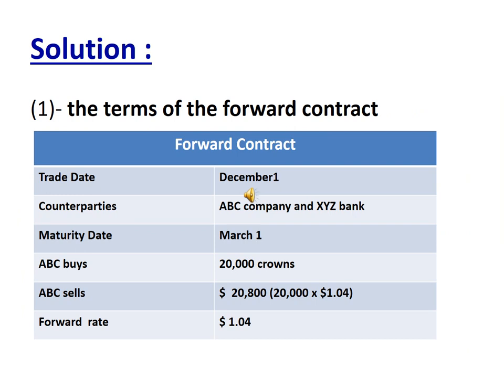The first question asks about the terms of the forward contract. The trade date is December 1st. The counterparts are APC Company and XYZ Bank. The maturity date is March 1st. APC will buy 20,000 crowns and will sell 20,800 dollars, which is the result of 20,000 crowns multiplied by the forward rate of 1.04.